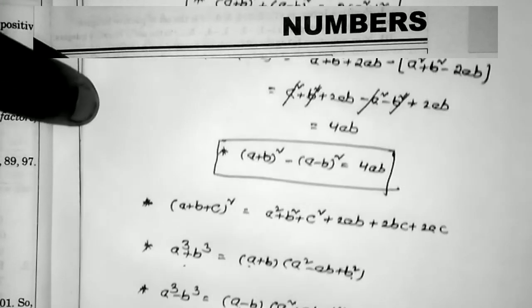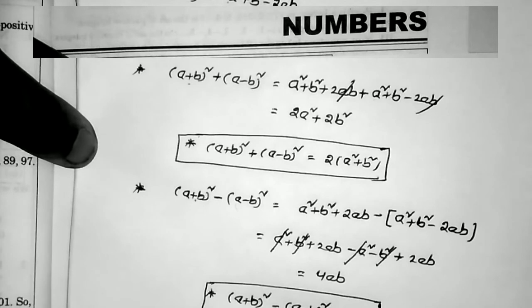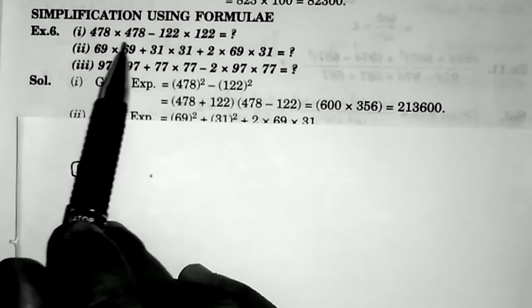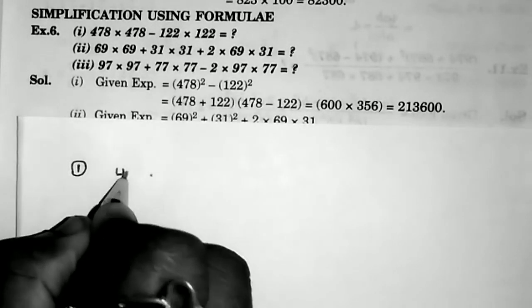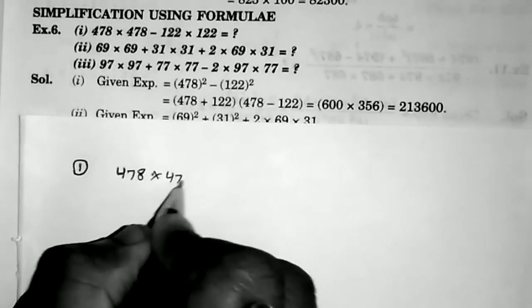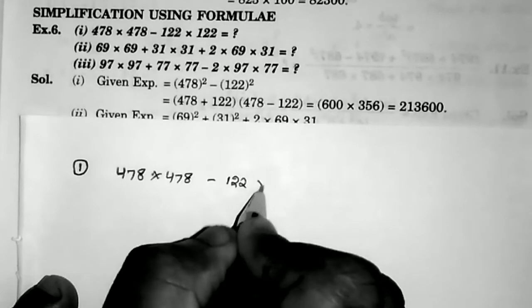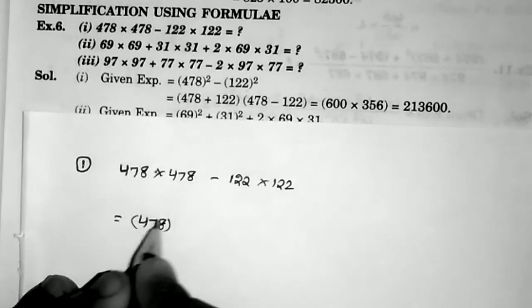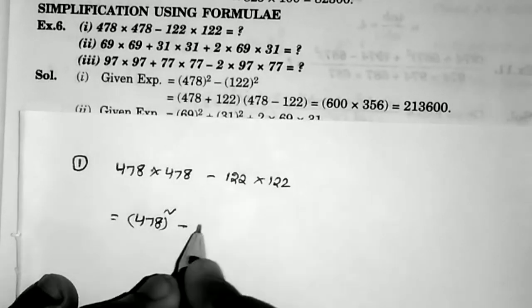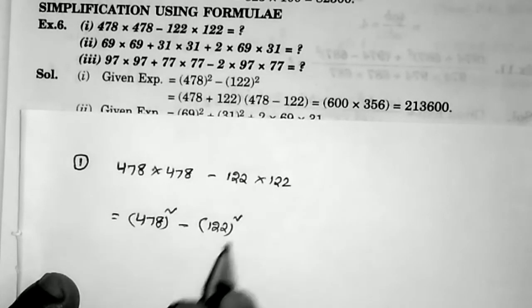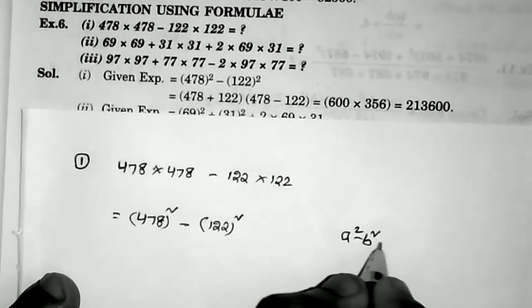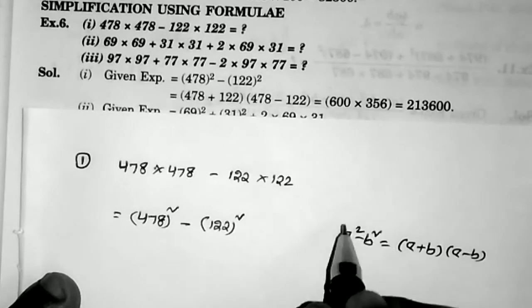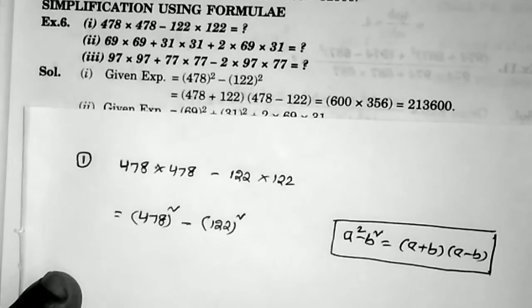Now let us see some problems. First example: 478 × 478 − 122 × 122. This equals 478² − 122², which is in the form of a² − b². The formula for a² − b² is (a + b)(a − b).